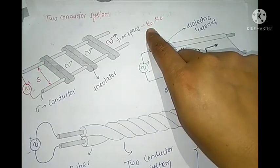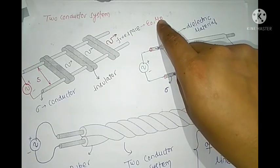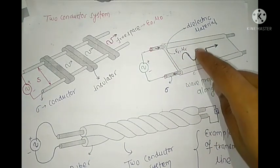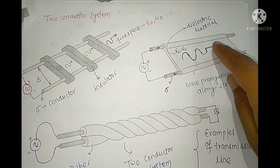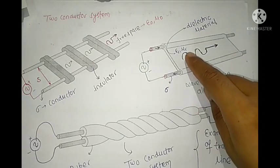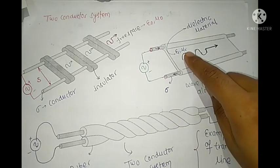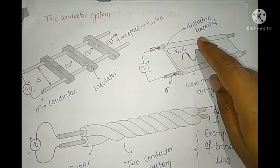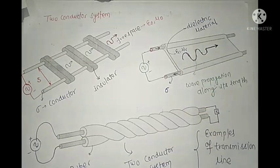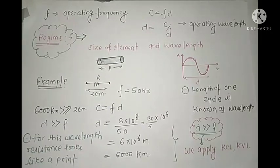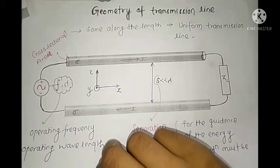The property of free space is represented by epsilon-naught and mu-naught. In the second case, the wave is propagating in a dielectric medium. Remember that dielectric mediums are non-magnetic, so the value of mu-r is equal to one. These are the examples of transmission lines.